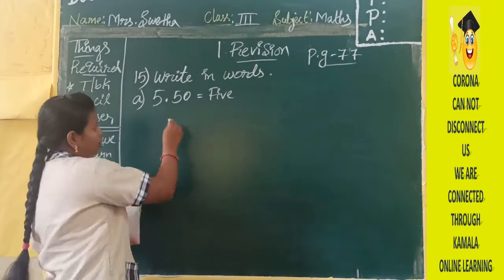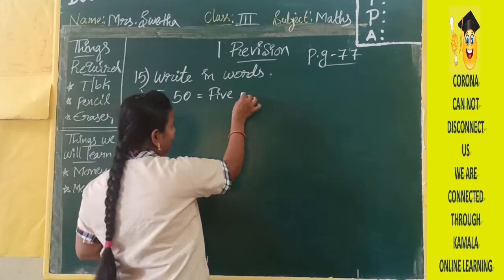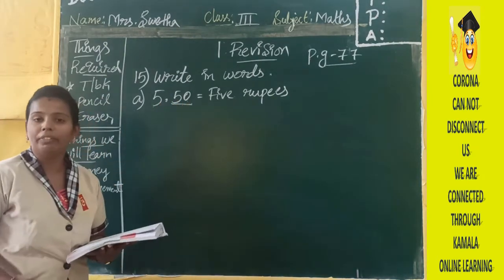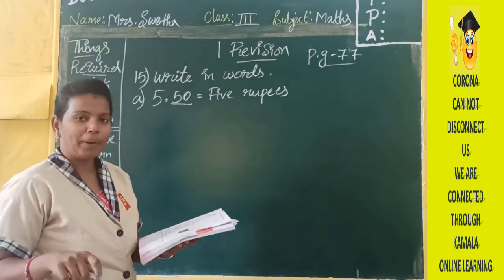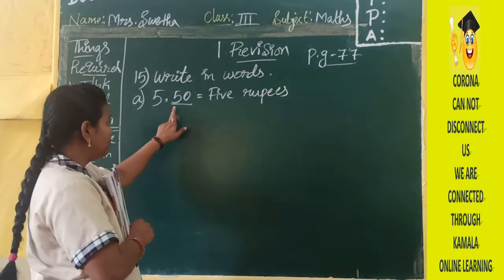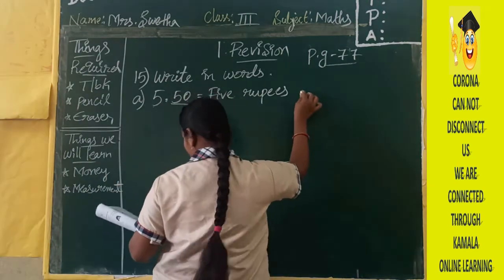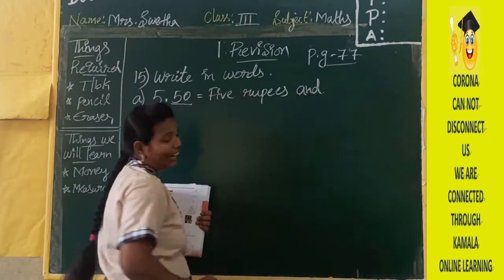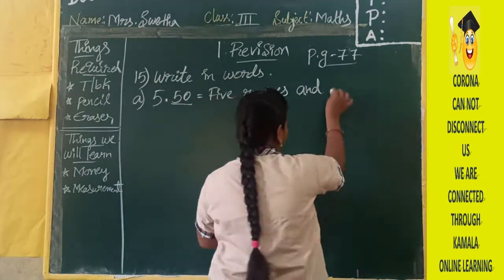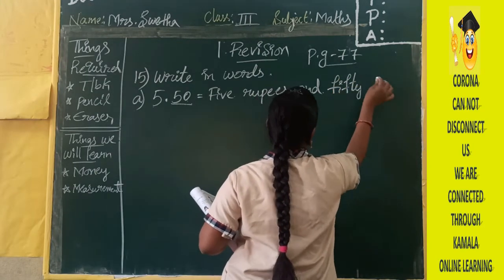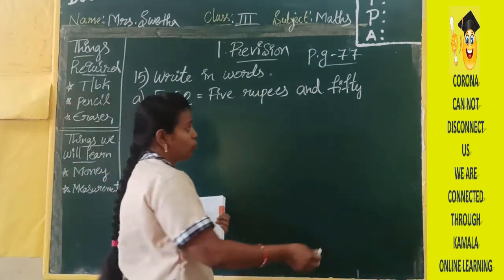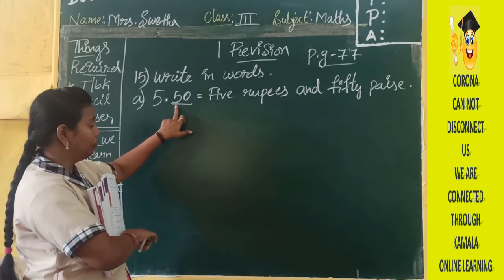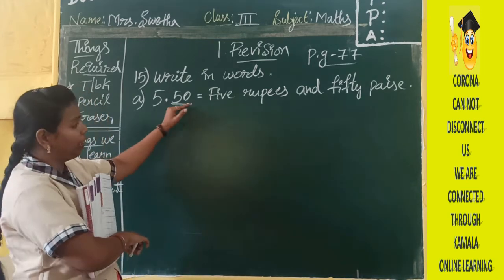After this decimal point, whatever you have will be pies. So you take those two digits together — five and zero make fifty. The decimal point is separating rupees and pies. Wherever you have a decimal point, you write 'and'. So: five rupees and fifty pies. Write the spelling F-I-F-T-Y, and because it is pies, we write 'pies' — fifty pies.